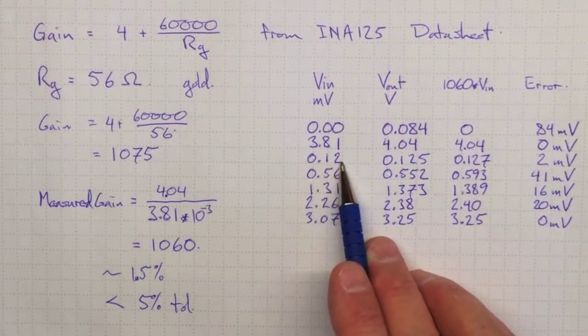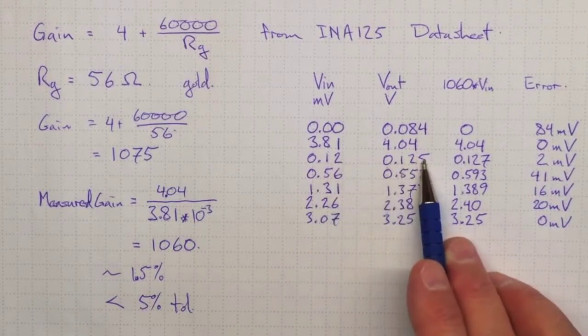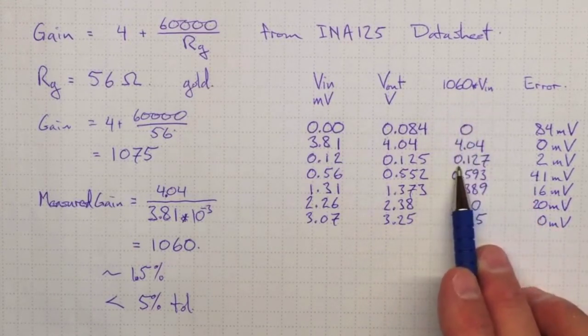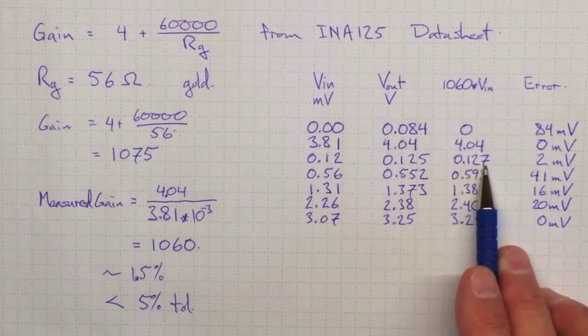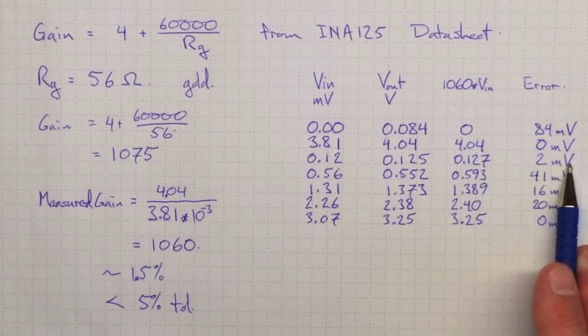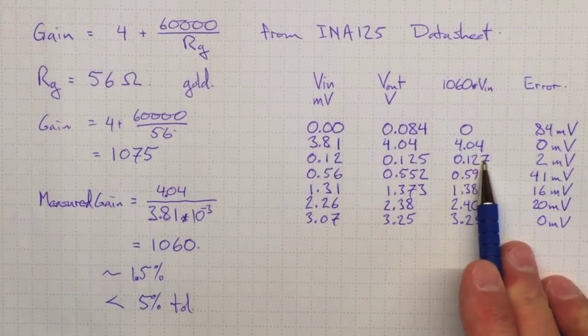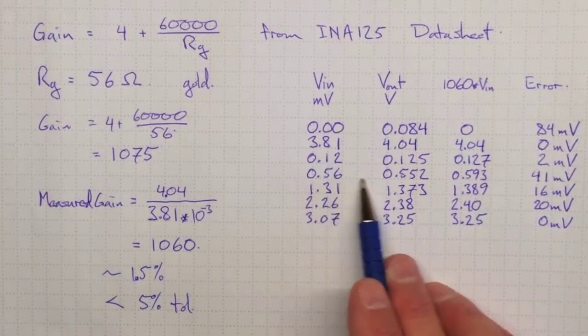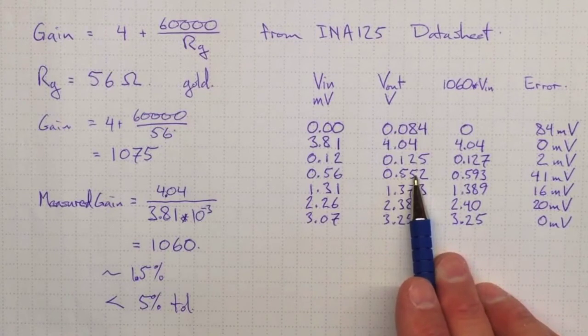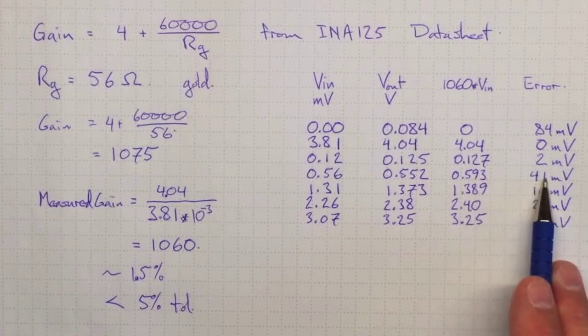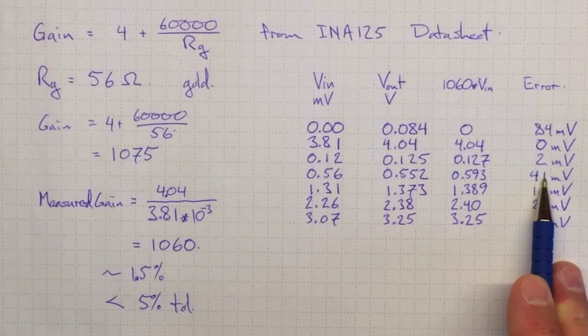0.12 millivolts, a very small voltage. 0.125 volts out. If we use our 1060 gain equation, we ought to have got 0.127 volts out. So the readings in error are by about 2 millivolts. That's within the limits of accuracy of the meter. So that's pretty good. 0.56 volts. We actually got a value lower than we would have expected. We would have expected to get 0.593. We're off by 41 millivolts. I might almost be worried that I didn't do that measurement very well.